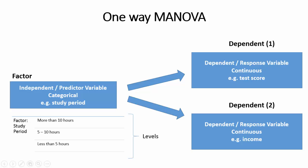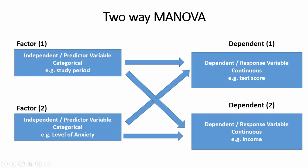In this example, we see a one-way MANOVA that compares two continuous response variables, namely test score and income, by a single factor variable, which is a categorical study period and level of anxiety.